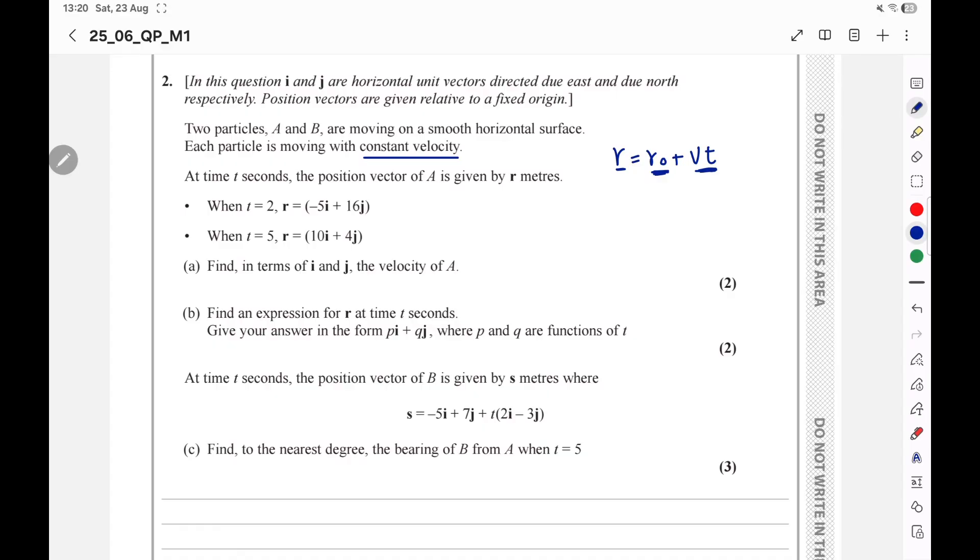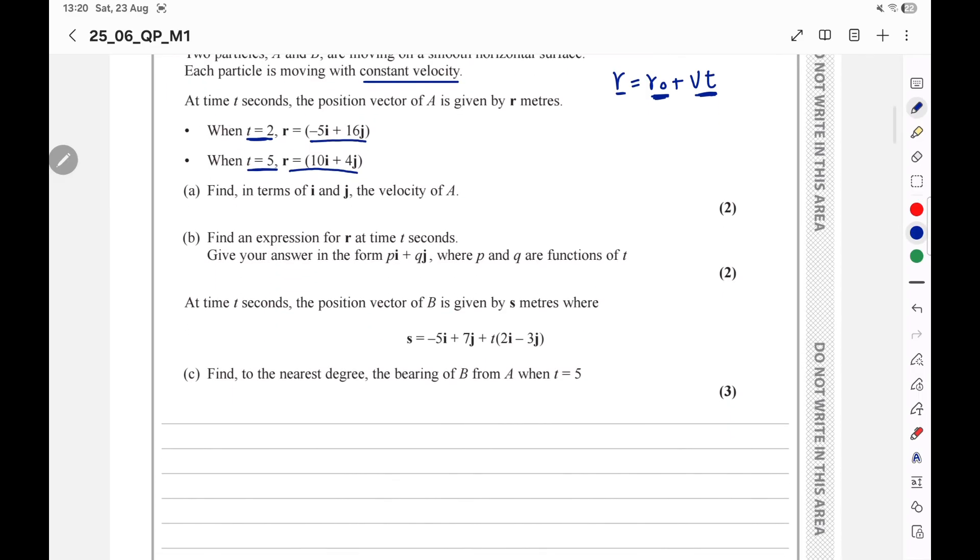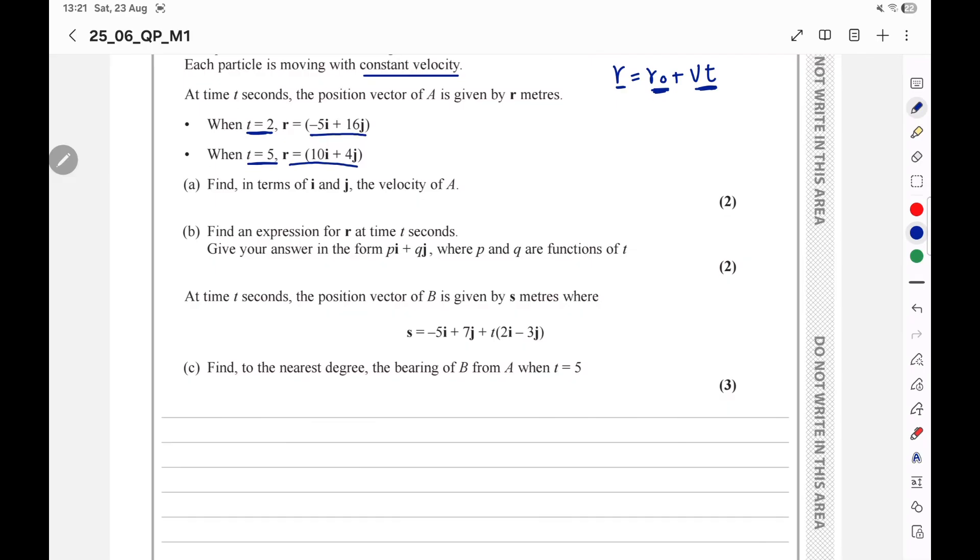At time t seconds, the position vector of A is given by r meters. When t equal 2, the position is negative 5i plus 16j. And when t equal 5, the position is 10i plus 4j. Alright, we will substitute in the rule. In part A, he wants us to find the velocity.